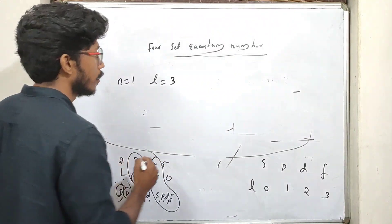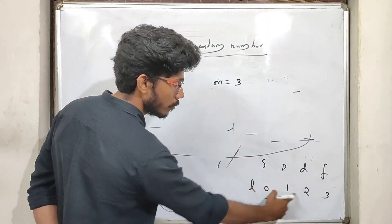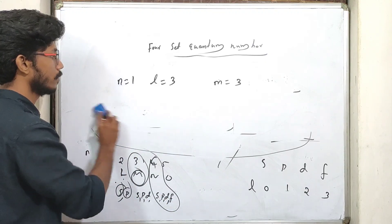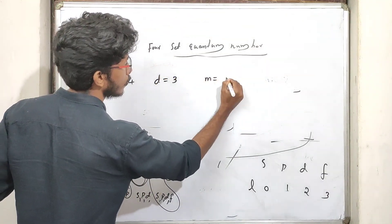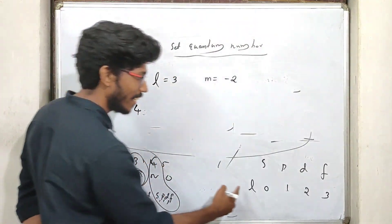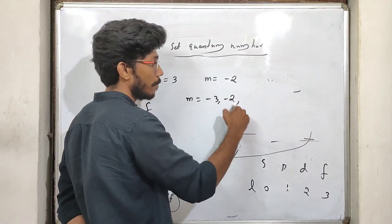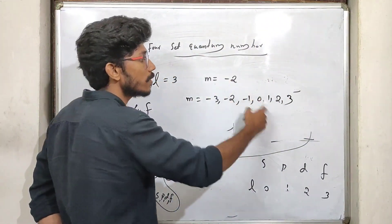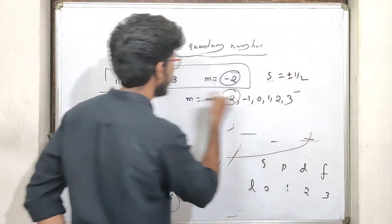Now, n equal to 3, n equal to 1, m equal to 3 — the K main shell cannot have f sub-shell. Now, is n equal to 4, l equal to 3, m equal to minus 2 possible? For n equal to 3, l equal to 3, m equal to 3: f sub-shell has L equal to 3, and M ranges from minus 3 to plus 3, so minus 3, minus 2, minus 1, 0, 1, 2, 3 — that includes minus 2. Hence these set of quantum numbers are possible.